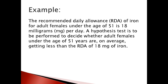Another example: the recommended daily allowance of iron for adult females under the age of 51 is 18 milligrams. That's the given information — the recommended daily allowance of iron is 18 mg per day. Without reading all the other sentences, you can say the null hypothesis is: H₀ such that μ = 18 mg per day.